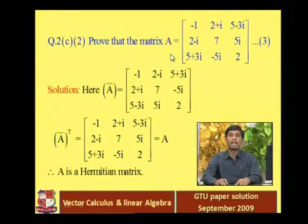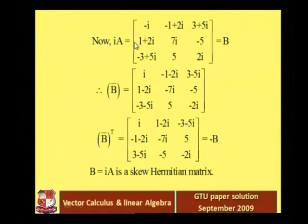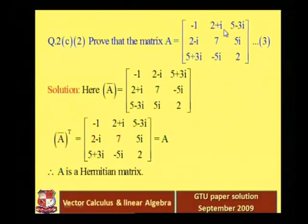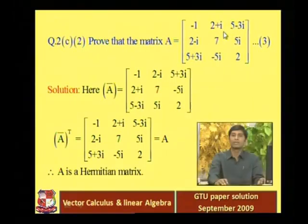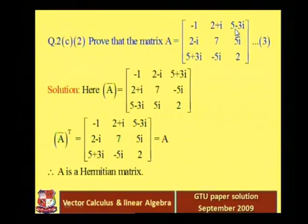Now we prove that i×A is a skew-Hermitian matrix. We multiply every element of A by i, getting B = i×A. For example: i×(minus i) = minus i²  = 1; i×(2 + i) = 2i + i² = minus 1 + 2i; i×(5 minus 3i) = 5i minus 3i² = 3 + 5i.